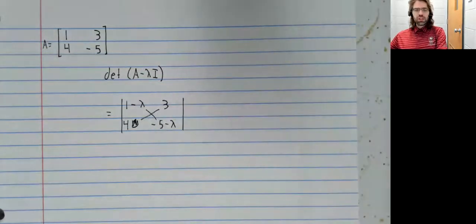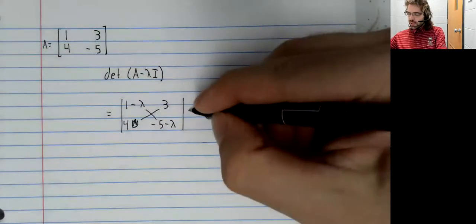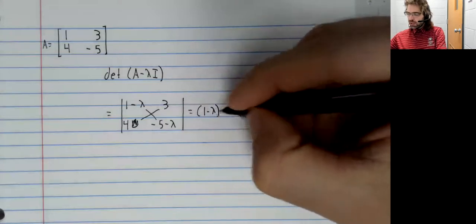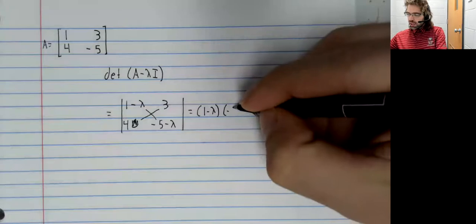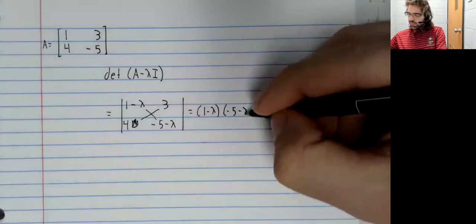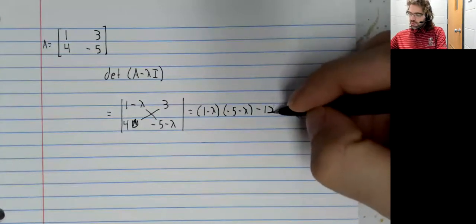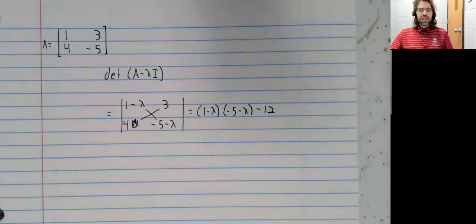Finding the determinant of a two by two matrix isn't bad. We multiply the diagonal elements, and we multiply the anti-diagonal elements, and we subtract them.